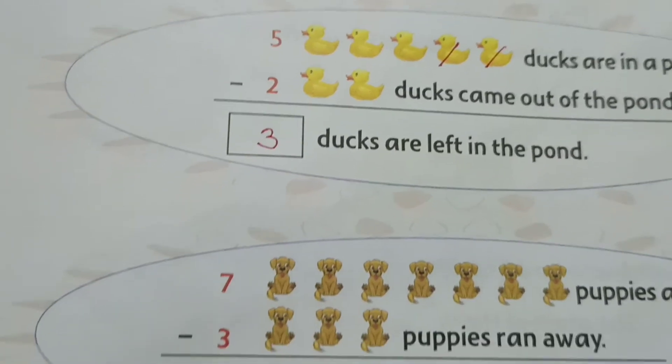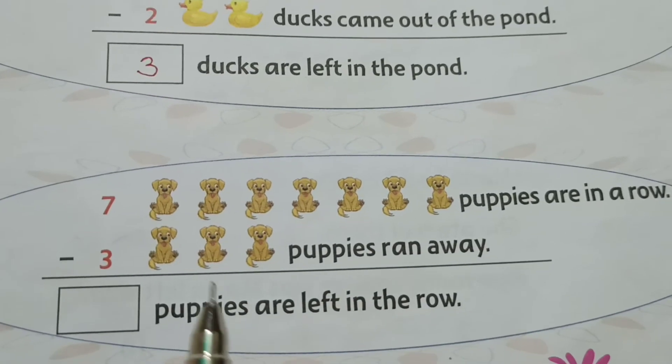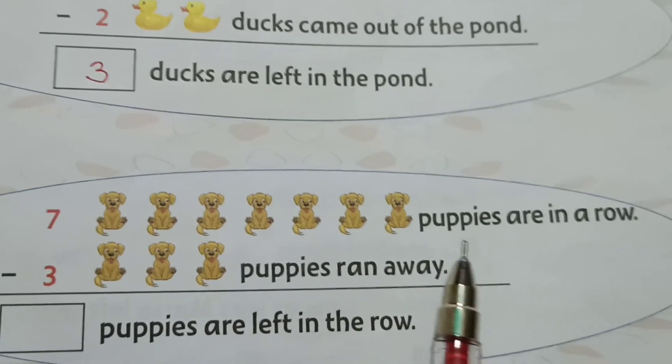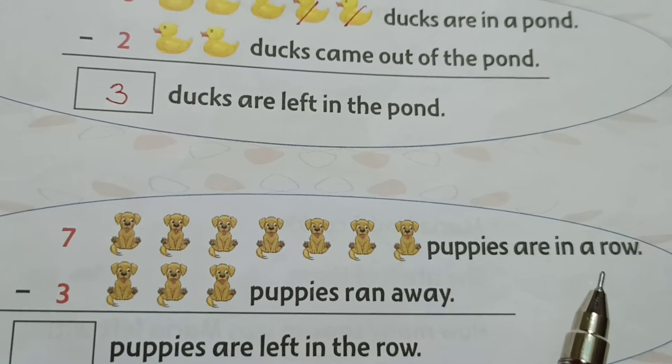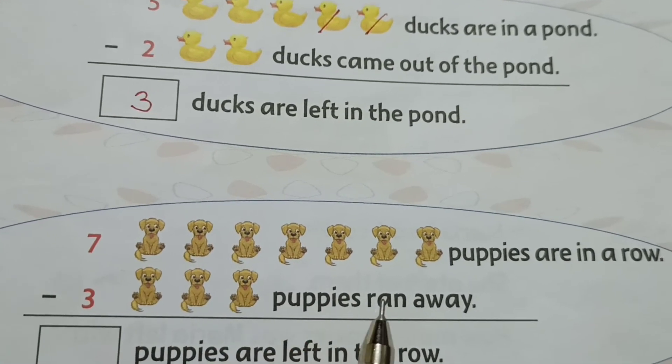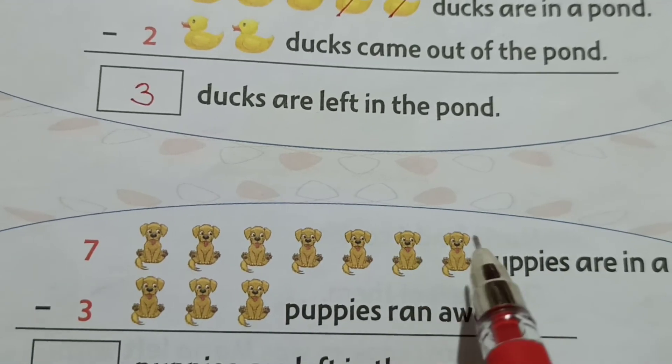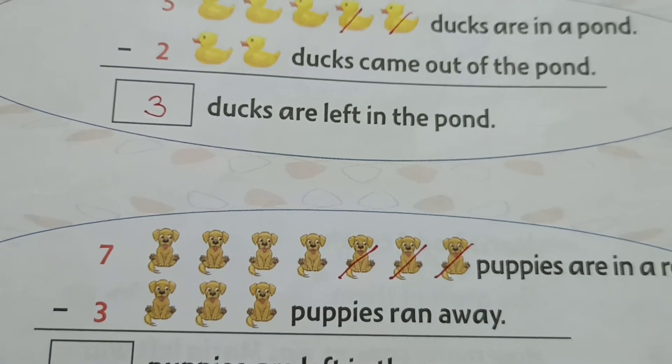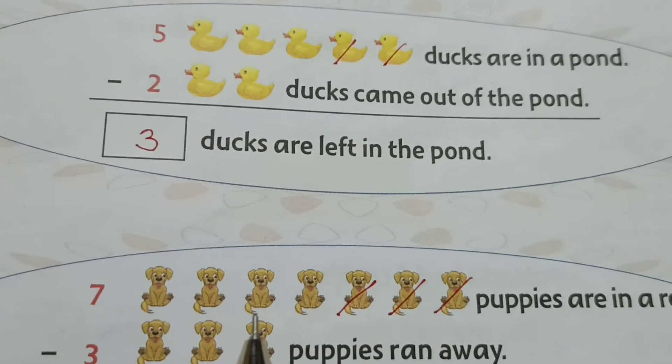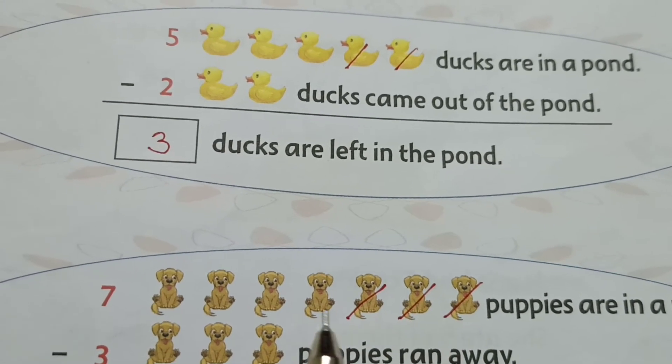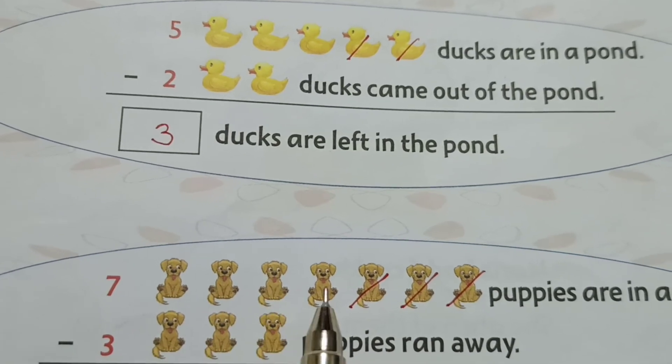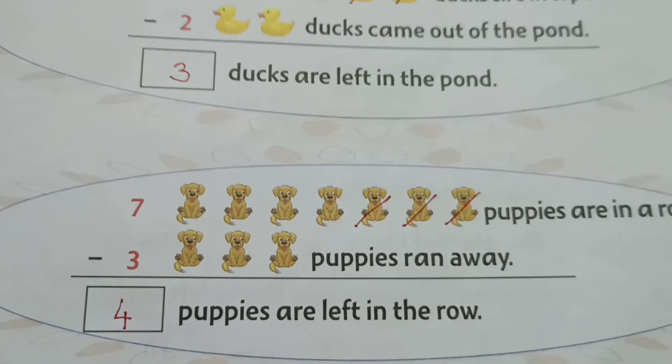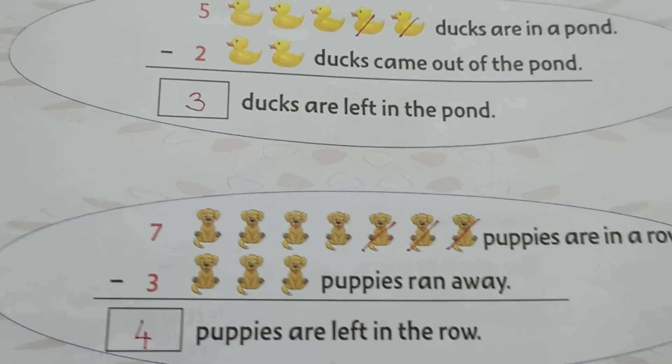Now your next one is puppies. Count how many puppies are there: 1, 2, 3, 4, 5, 6, 7 puppies are in a row. 3 puppies ran away. So we will cut 3 puppies: 1, 2, 3. Now see here, how many remains? From the 7 puppies, we took out 3. So remains 1, 2, 3, 4. So how many puppies remain? 4. 4 puppies are left in the row.